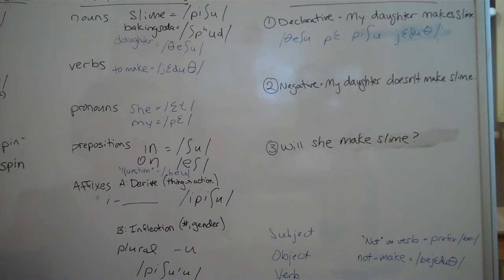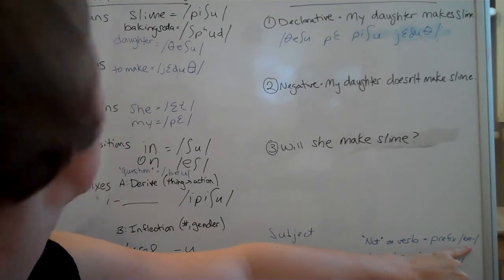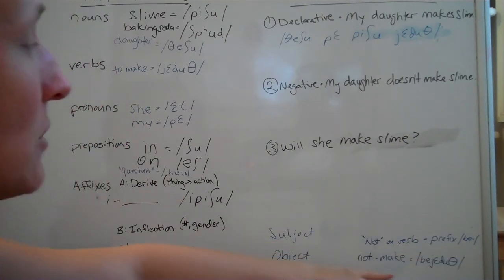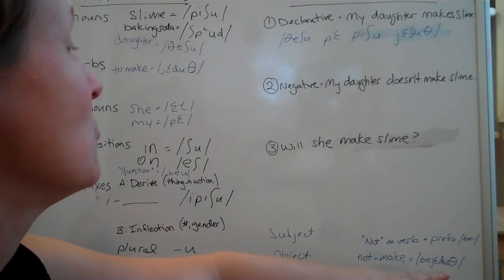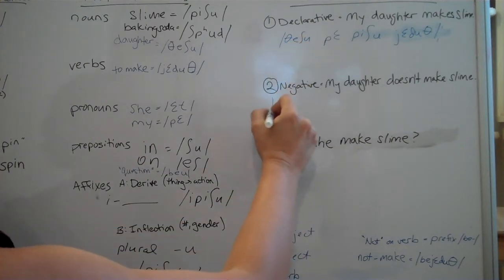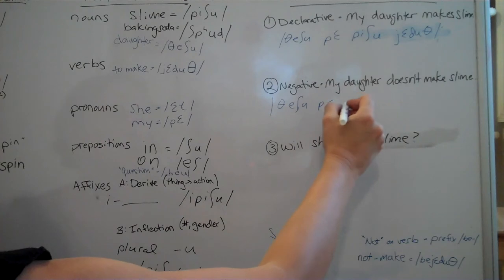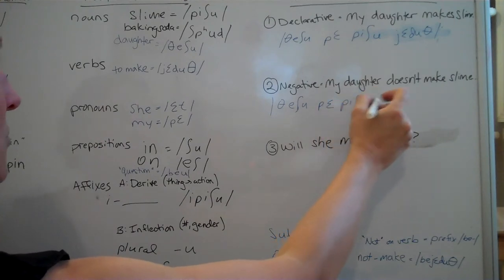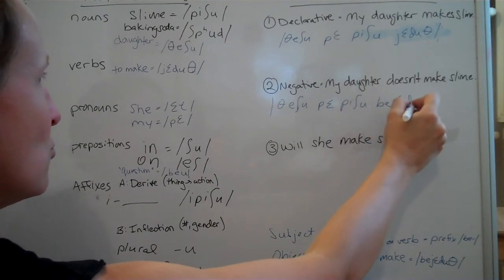There we go. Now we need to make it negative. So my rule for turning something into a negative is to put on a prefix of be. So I will add be to be yeduth. Be yeduth means not make. So I rewrite my sentence. Pishu, pe, pishu, bay, yeduth.